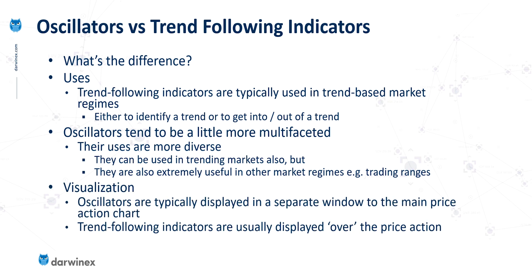We also tend to visualize the information from these indicators in a slightly different way. Oscillators are typically displayed in a separate window, usually underneath the main price action chart, whereas trend following indicators tend to be displayed over the price action.